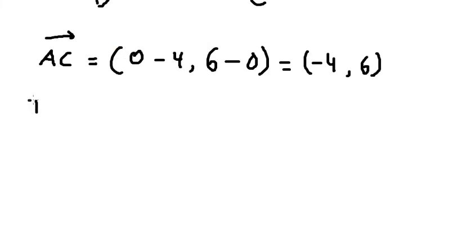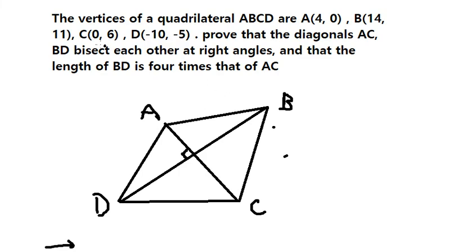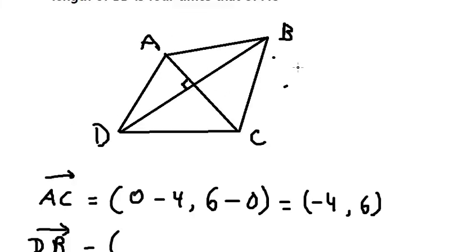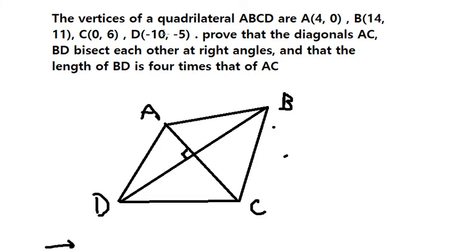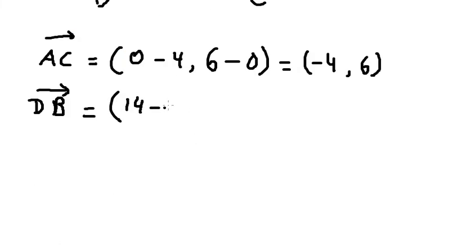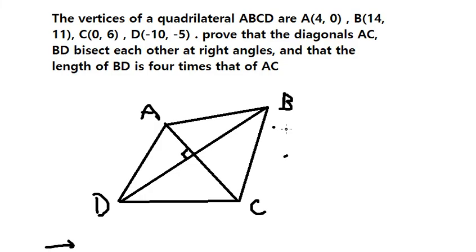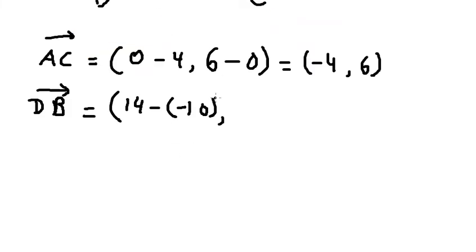So we have 14 minus negative 10, and the next one we have 11 minus negative 5. This gives us 24 and 16.